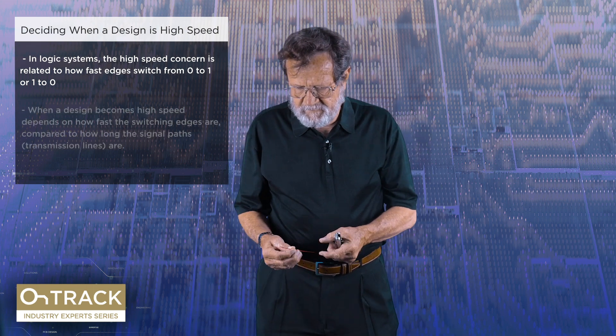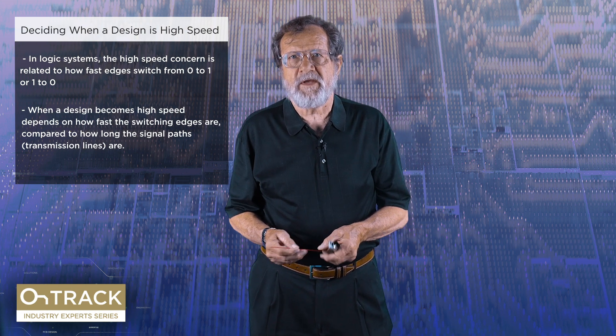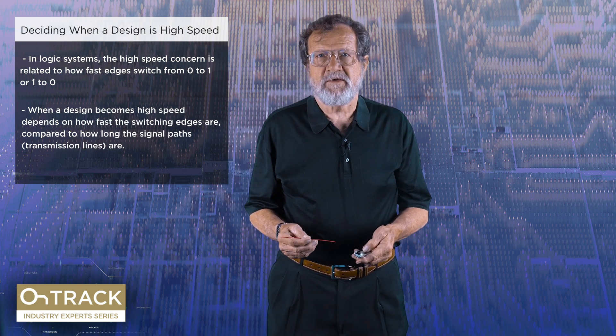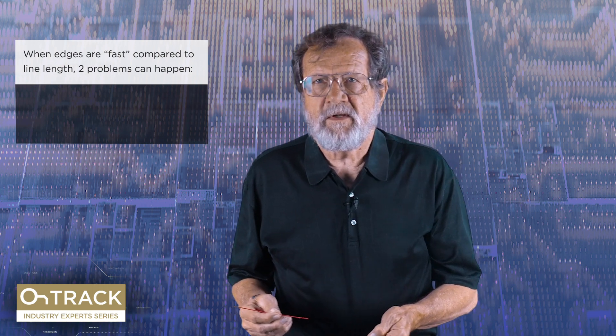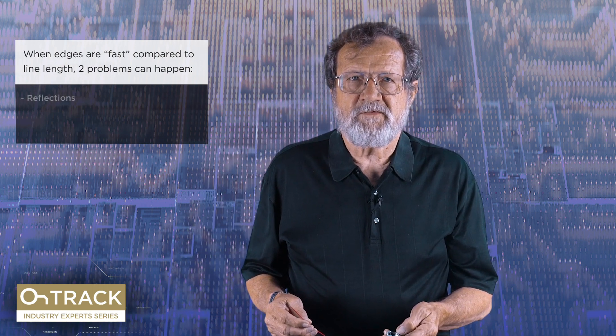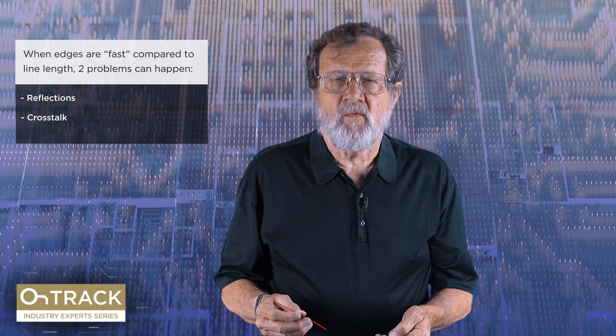What we have to do to figure out whether or not a signal is high-speed is compare the rise time to how long the path is that the signal is traveling down. Once we've done that, we will discover that one of two things can happen. The first thing you'll see as you go up the speed curve is reflections, and that will be followed in dense boards by crosstalk. We'll look at how to tell when we have a trace that is long enough to be concerned about reflections or crosstalk.